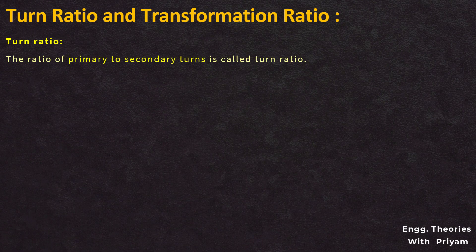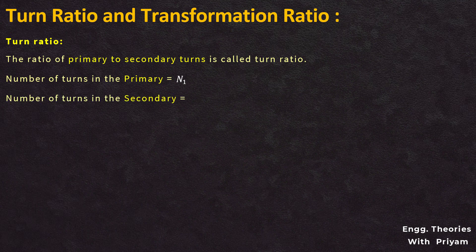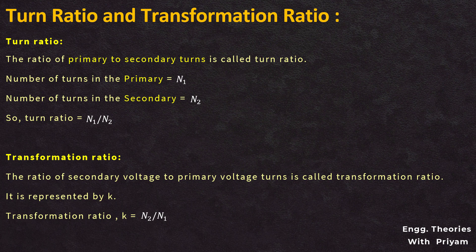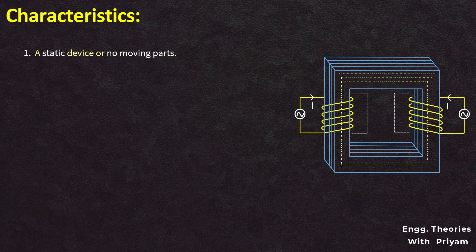Turns ratio: The ratio of primary to secondary turns is called the turns ratio. The number of turns in the primary side is N1 and in the secondary side is N2, so the turns ratio is N1/N2. Transformation ratio: The ratio of secondary voltage to primary voltage is called the transformation ratio, represented by K. So K = E2/E1 = N2/N1, since E2 is proportional to N2 and E1 is proportional to N1.